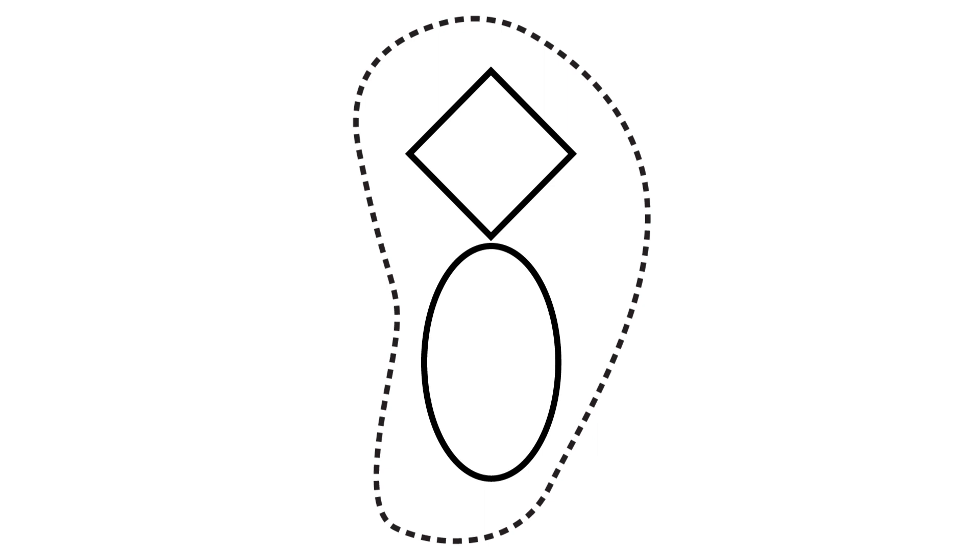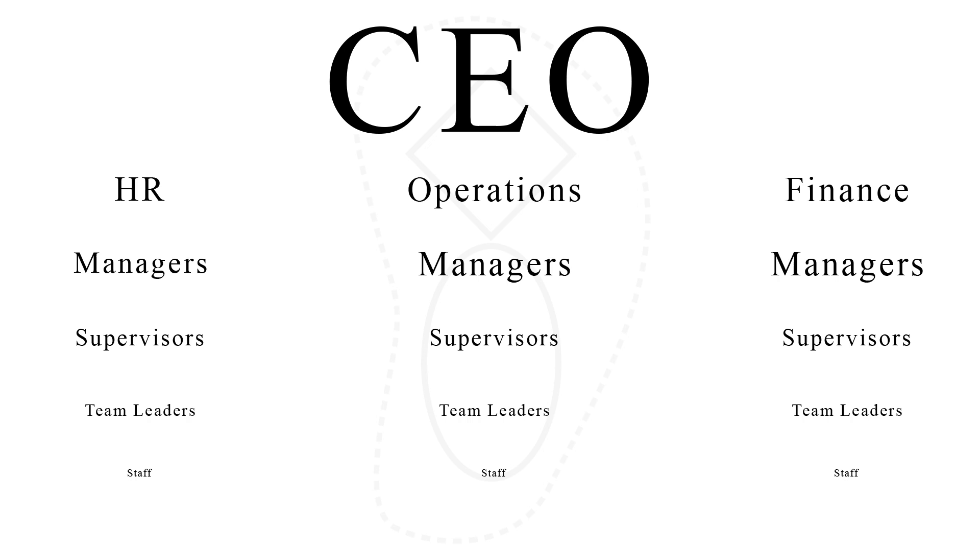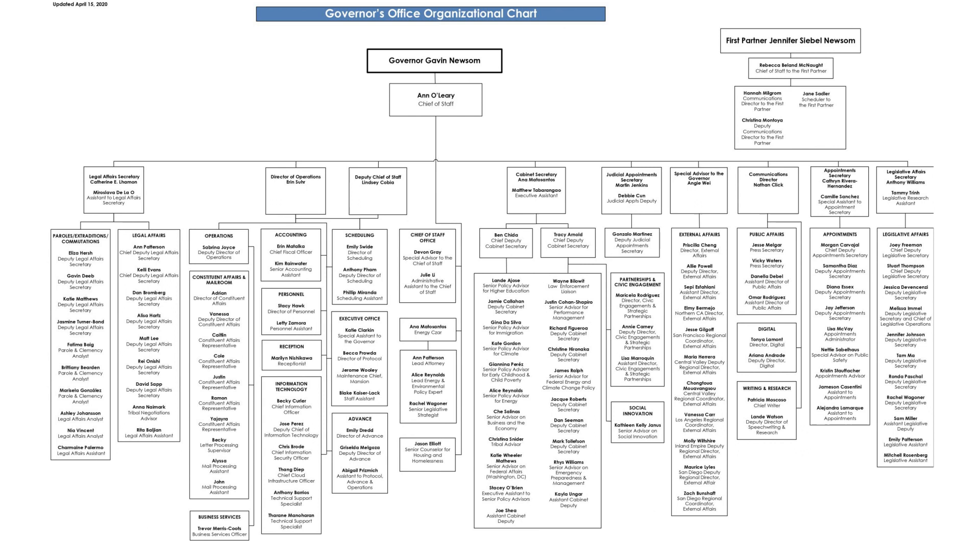The viable system model stands in contrast to many modern human-made systems. It attempts to remove the rigid hierarchical structures of top-down decision-making without falling victim to the disarray of complete decentralization. To Beer, the top-down approach of, say, a governmental hierarchy is as unintuitive as it is inefficient.